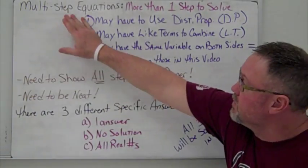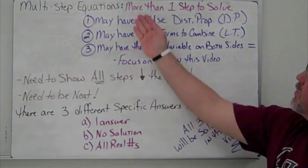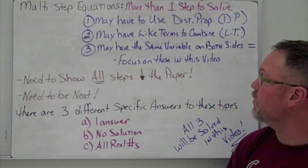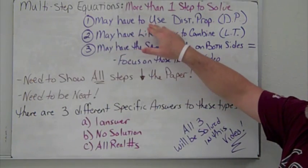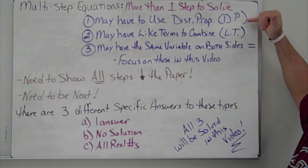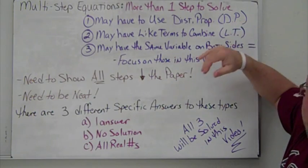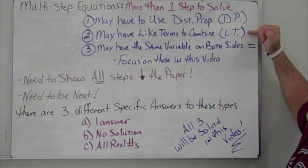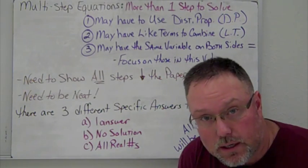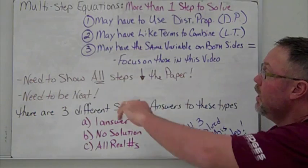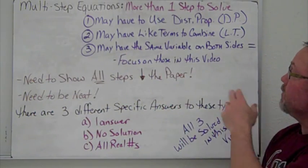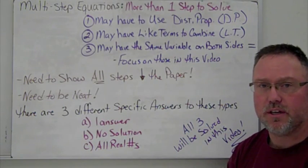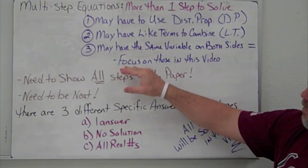Today's video is on multi-step equations — there's more than one step to solve, so this puts everything together we've done so far. You may have to use the distributive property (DP), you may have like terms to combine (LT), and you may have the same variable on both sides of the equation, which is the main focus of this video.